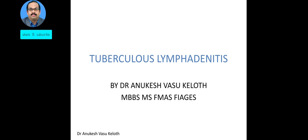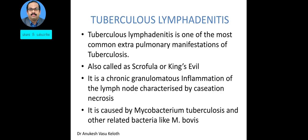Today we are going to talk about tuberculous lymphadenitis, previously known as Scrofula or King's Evil. It is one of the most common extra-pulmonary manifestations of tuberculosis. It is a chronic granulomatous inflammation of the lymph node, characterized by caseation necrosis, which is the key histological finding. It is caused by Mycobacterium tuberculosis and other related bacteria like Mycobacterium bovis, though in the majority of cases it is caused by Mycobacterium tuberculosis.